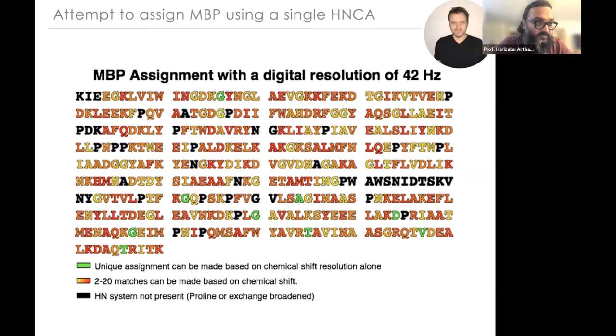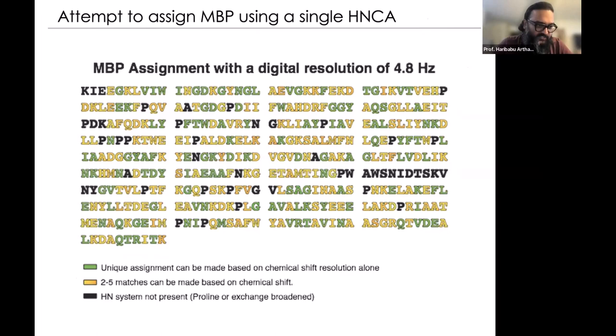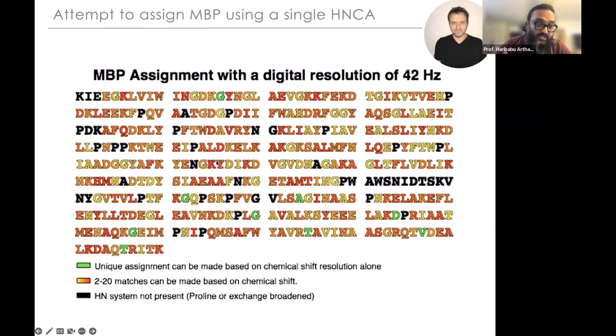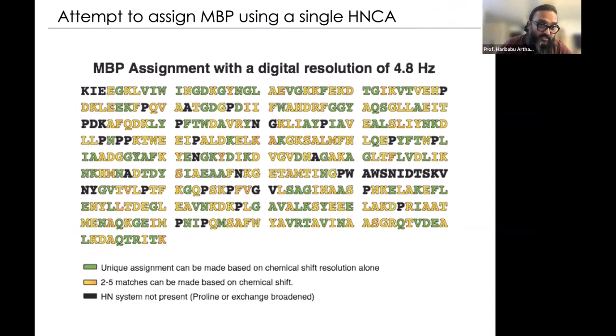Taking the same example at a resolution of about 4.8 Hz, the number of matches drops to between 2 and 5, and we can assign most residues — green marks unambiguous assignments. But here we're just using the central peak position as a marker. If you consider both the central peak position and the shape, something magical happens: two resonances may have the exact same central frequency, but only one has the matching shape.